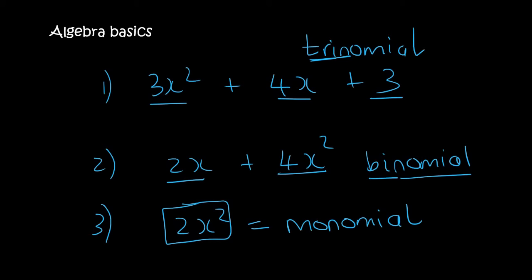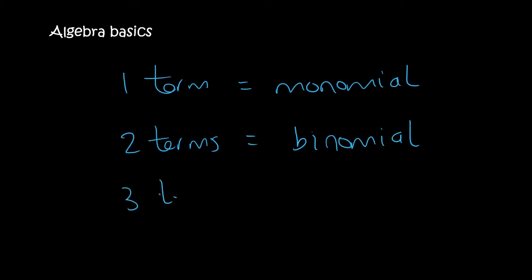So all of them end with nomial. Then you just got tri, bi, and mono. So if it's 1 term, that's monomial. 2 terms, binomial. And 3 terms will be a tricycle, so it's a trinomial.